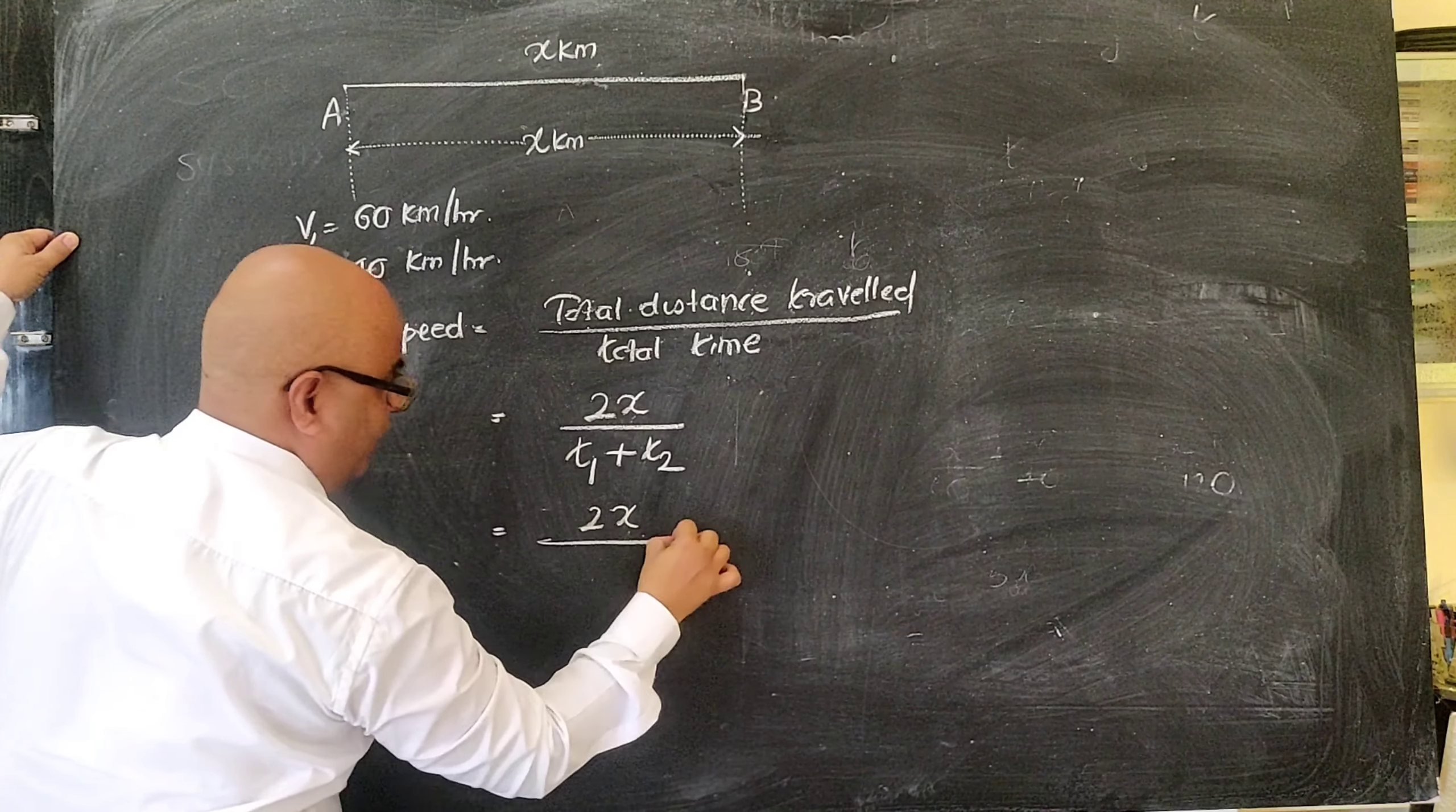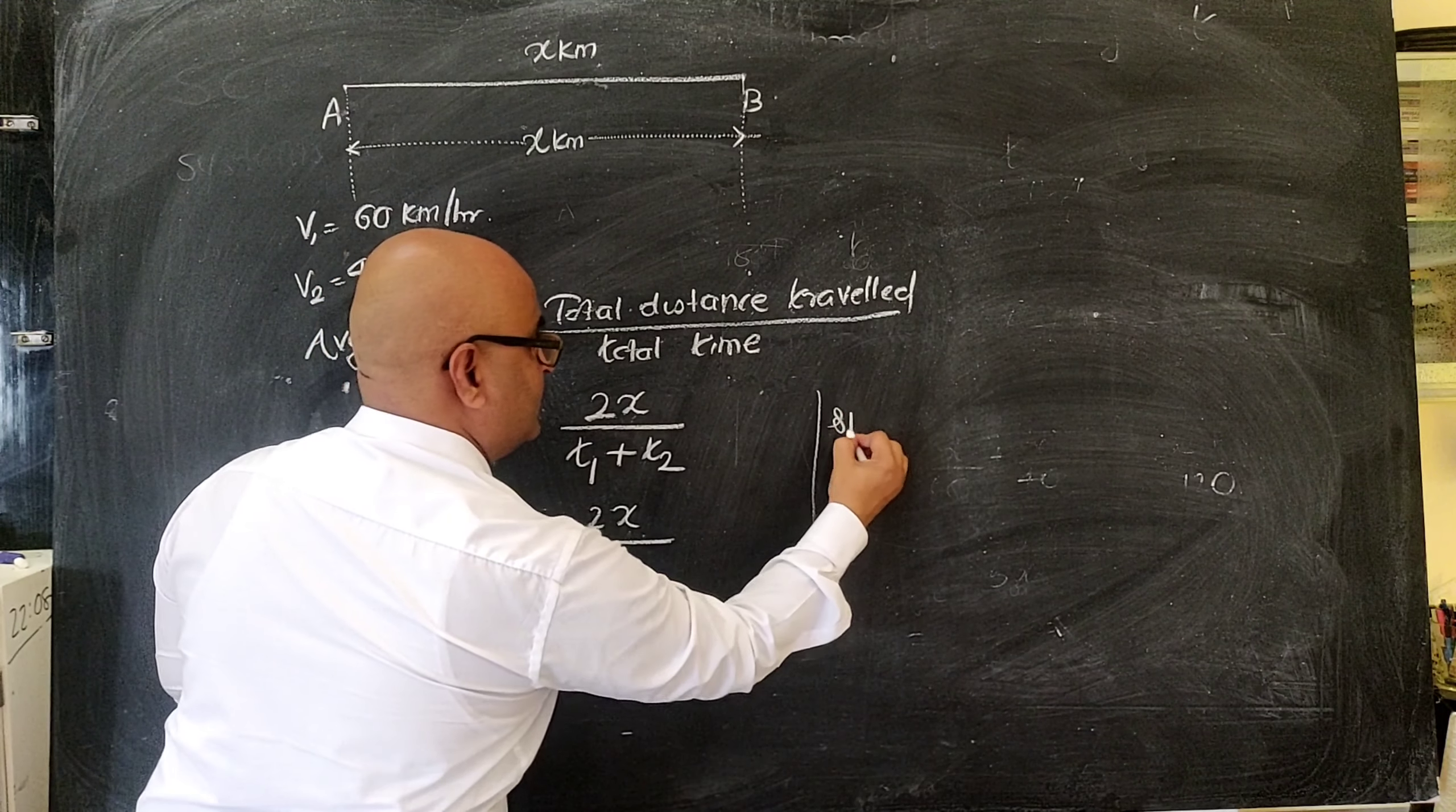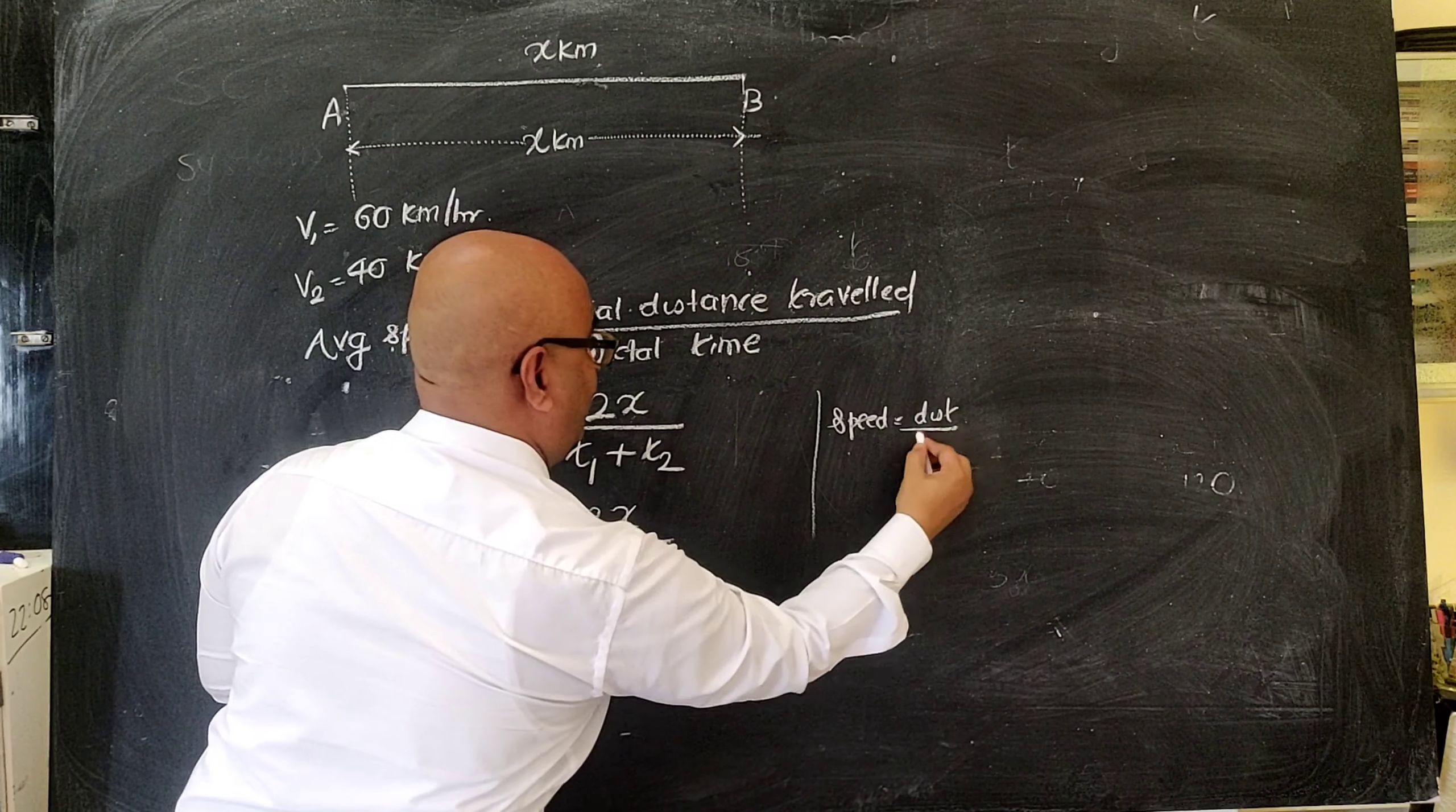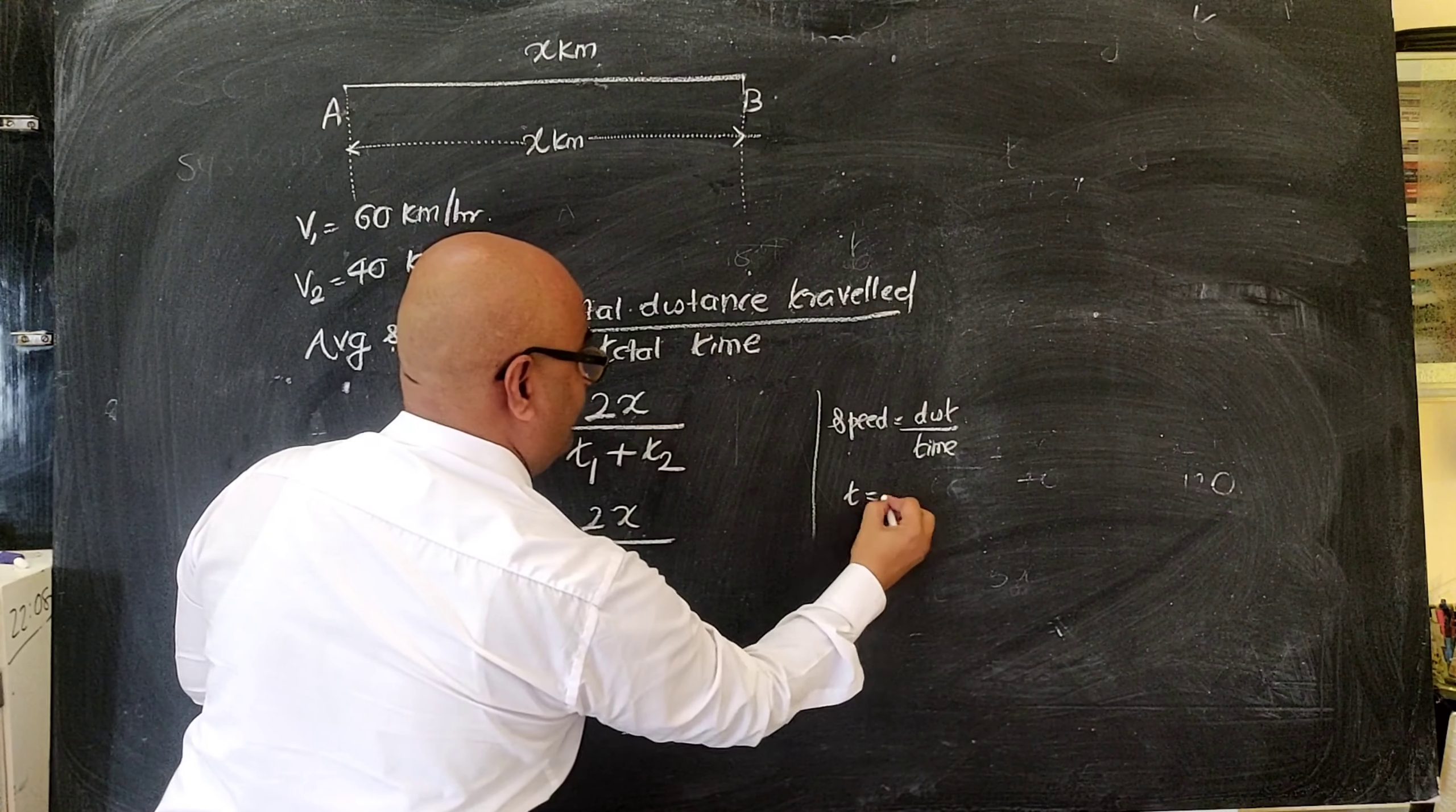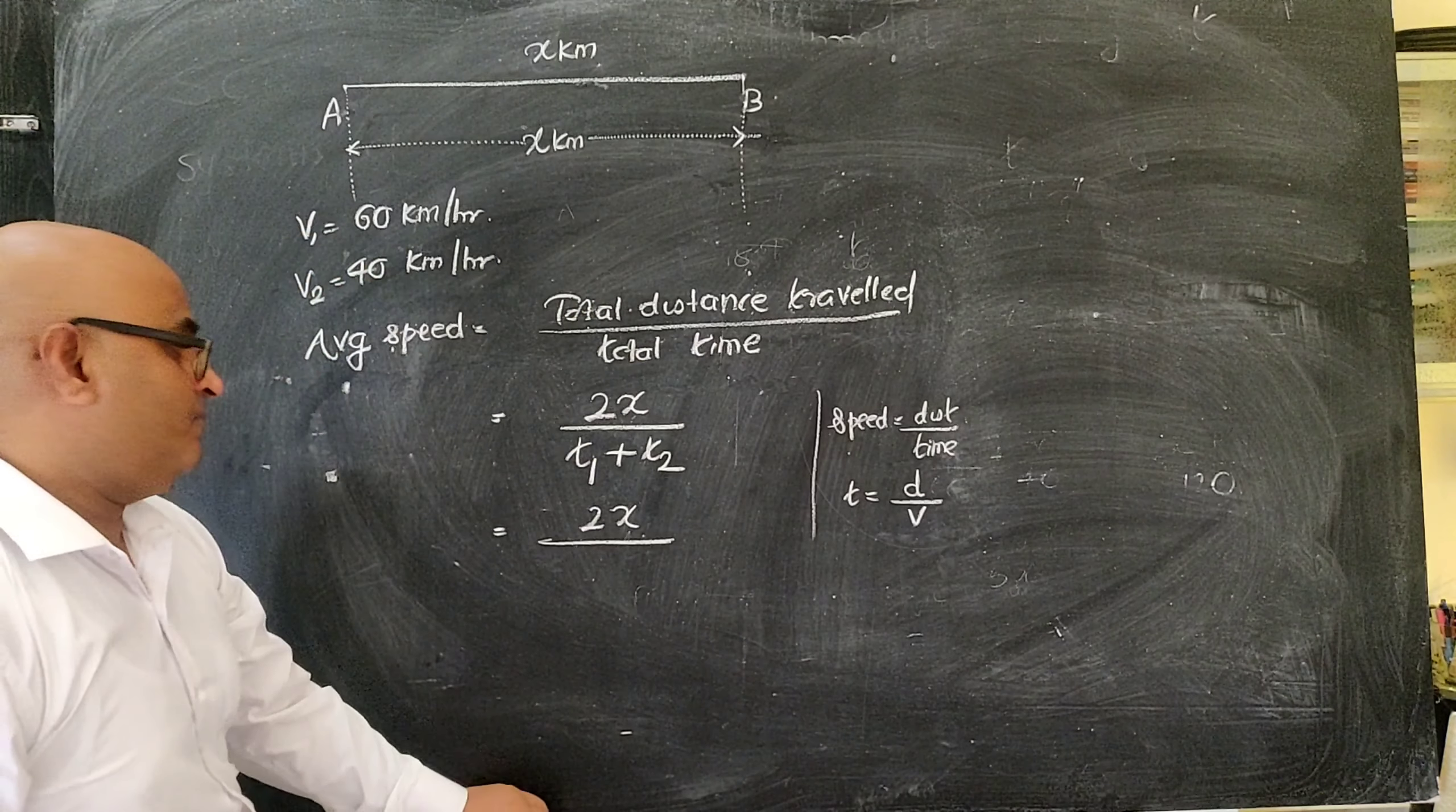Now this is equal to 2x upon. Now what is the formula for speed? Speed is equal to distance upon time. So what is time equal to? Distance upon speed.